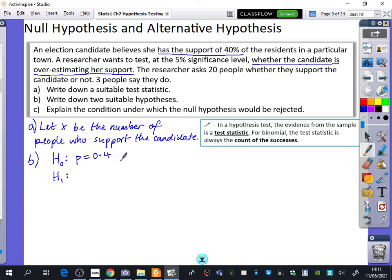But the alternative hypothesis, which we just do with H and a one, again you do a colon. The alternative hypothesis is what we are going to think could be the alternative thing that could be the truth. This is the important sentence. The researcher thinks that the candidate is overestimating her support. So what does the researcher think that the probability is? Less than 0.4. Good. The researcher thinks you don't have 40% of the vote. You've got less than 40%. You're overestimating it. You're actually more like 35% or 30%. So this is what the researcher thinks.